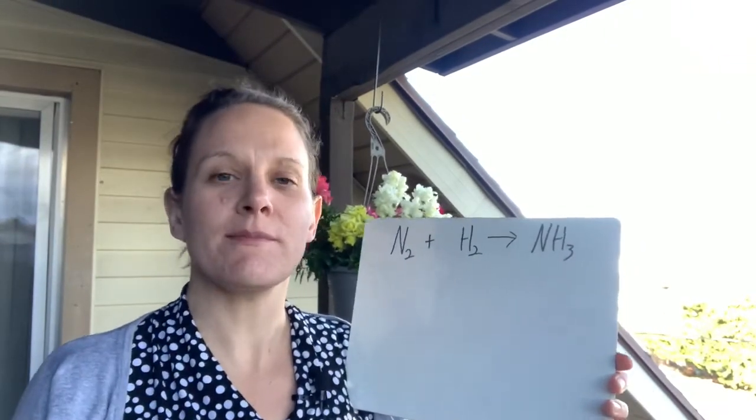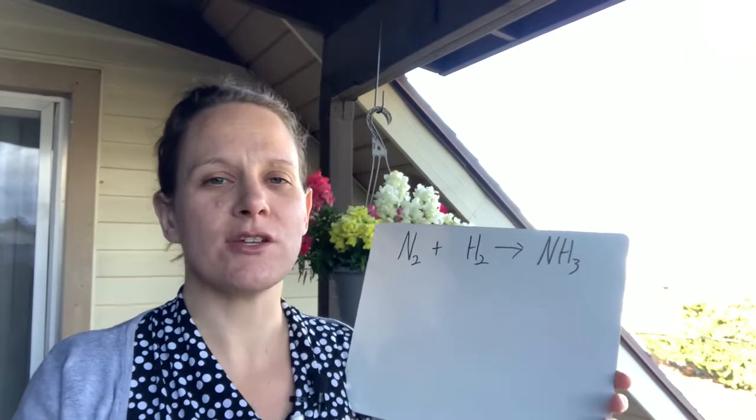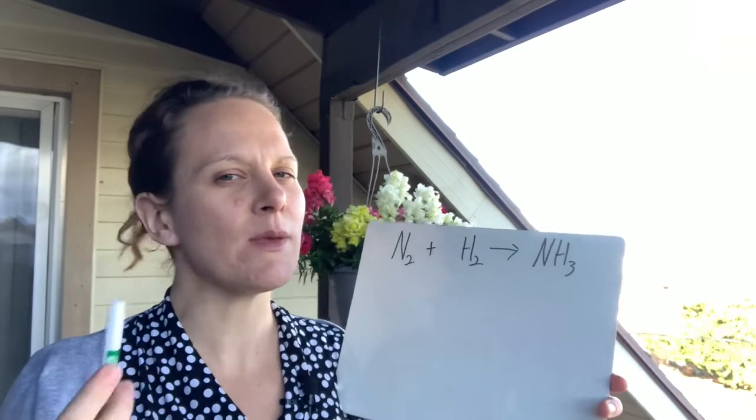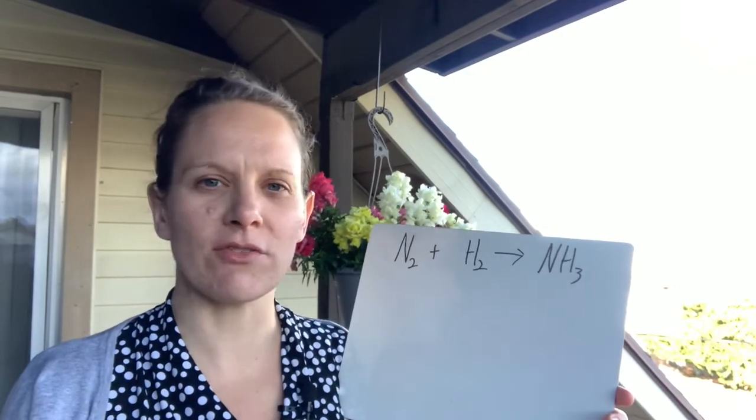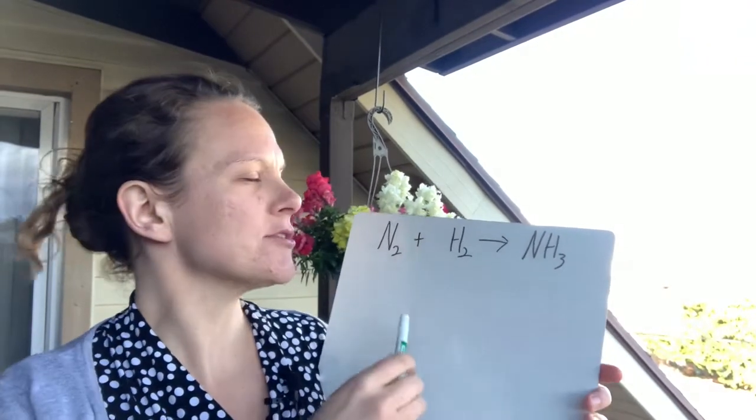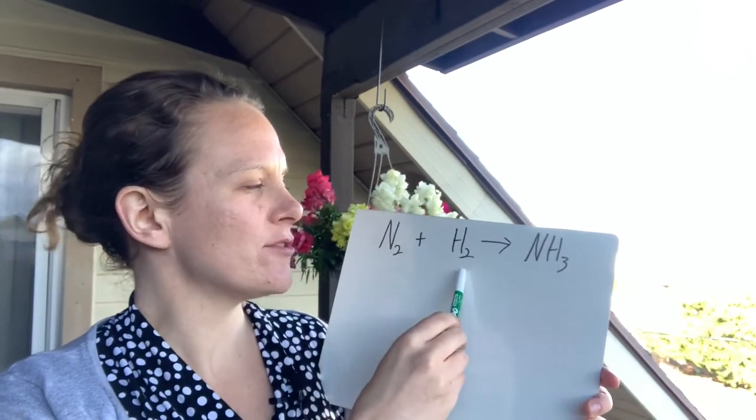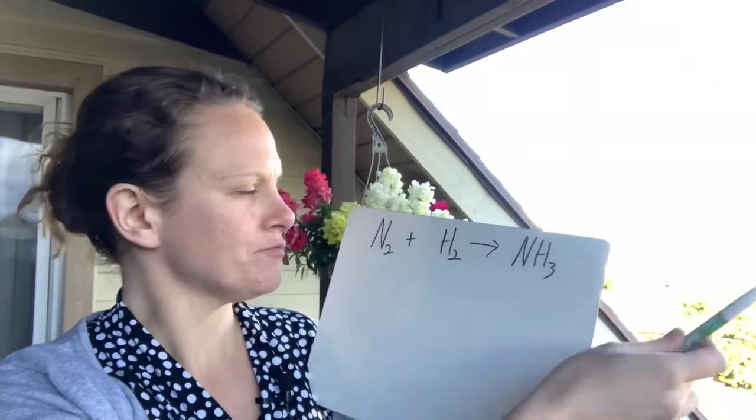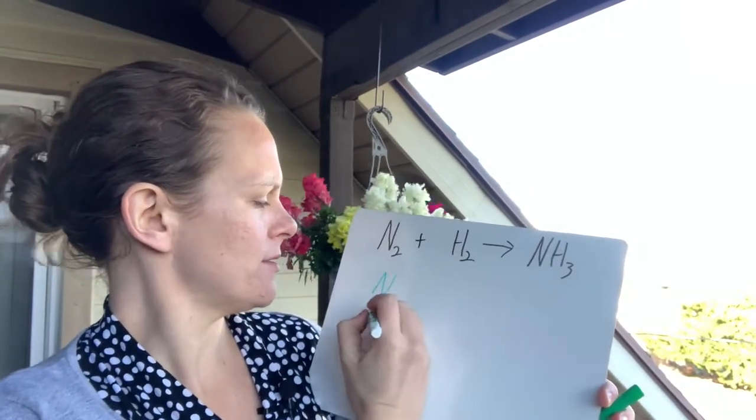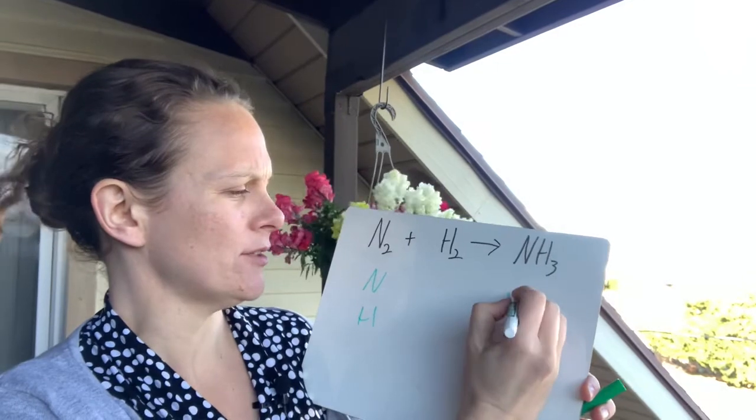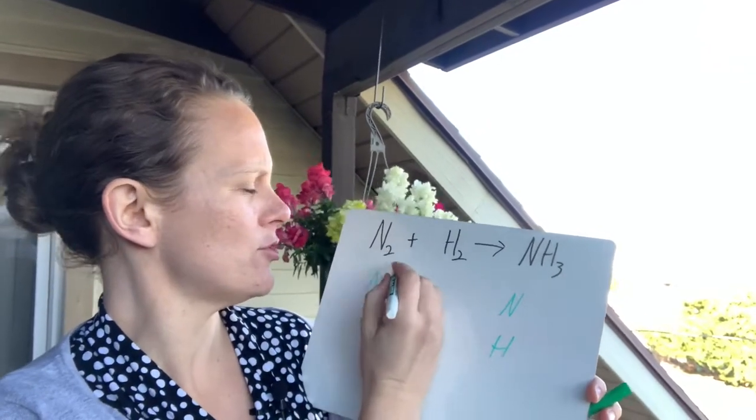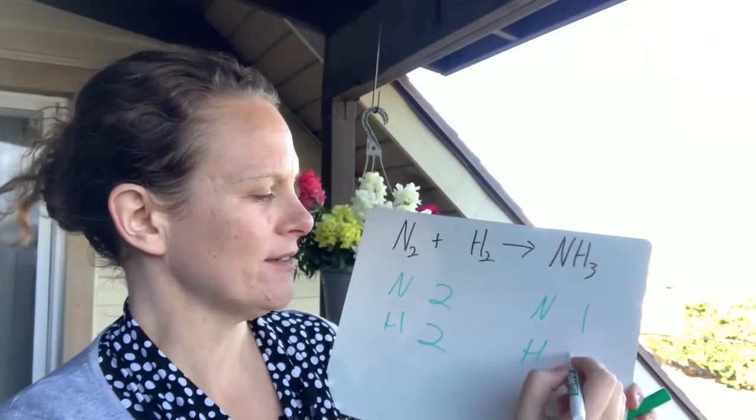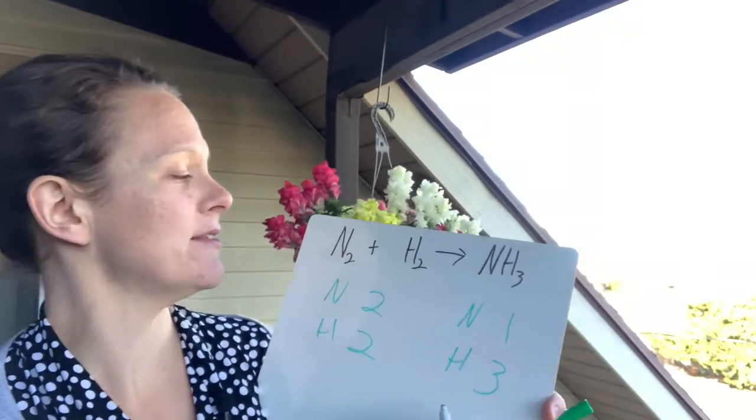Conservation of mass says that matter cannot be created or destroyed. It can only change forms. So when you have some kind of chemical reaction, nothing new is being created. It's just a recombination of things that were already there. Here's an example. I have N2 plus H2, and they combine to make NH3 or ammonia. Let me balance this out. I have two nitrogens and two hydrogens. One nitrogen and three hydrogens. That's not balanced at all.